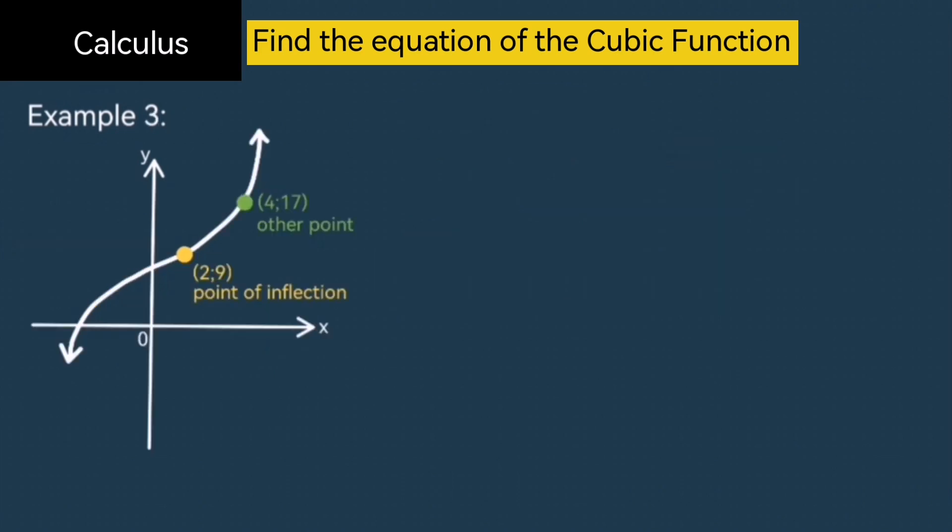And moving on to our third example. Here we have a cubic function which looks slightly different to the ones that we've been dealing with, because this cubic function doesn't have any turning points. Notice the graph is always increasing. However, it does have an inflection point. There's also another random point given, 4 and 17. That point we'll use a bit later. But first, for the inflection point, you always want to use this formula.